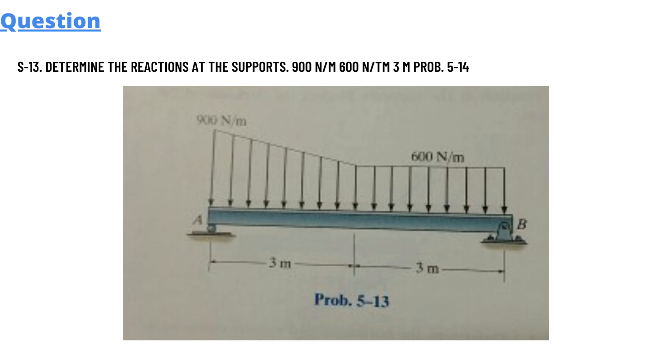So we have given a graph where 600 N/m and 900 N/m force is exerted on a slope. The distance between them is 5 meters each, and 3 meters each from point A to point B.